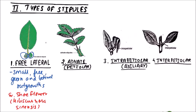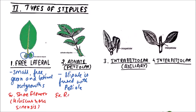The next type is Adnate or Petiolar stipule. This type of stipule is fused with the petiole, and that is also known as Petiolar stipule. The examples include Rose and Groundnut.